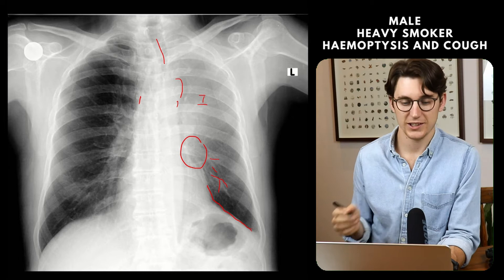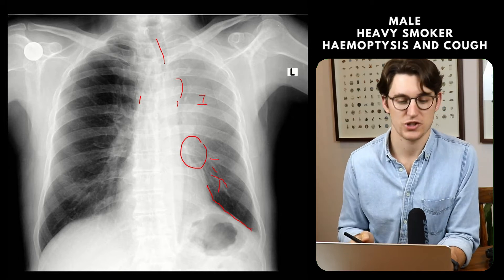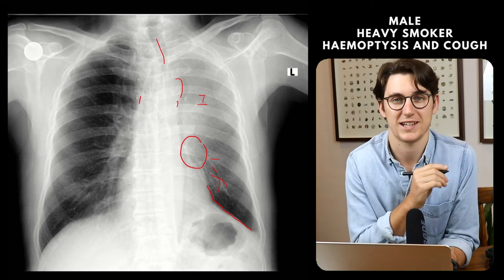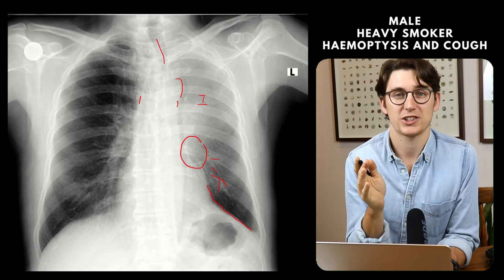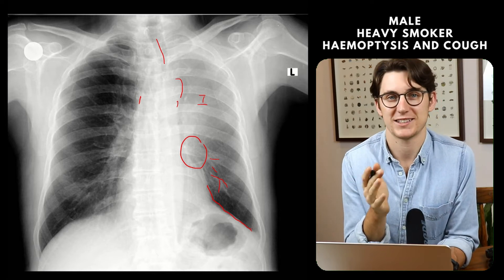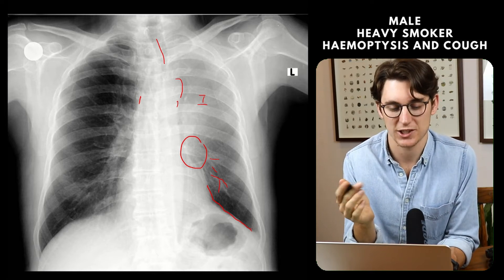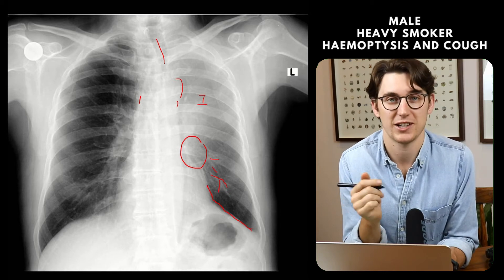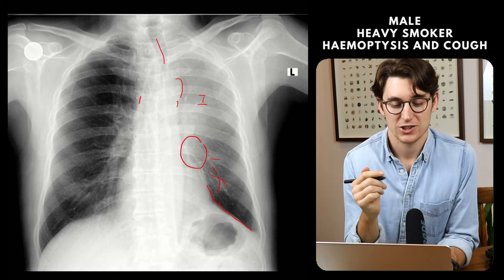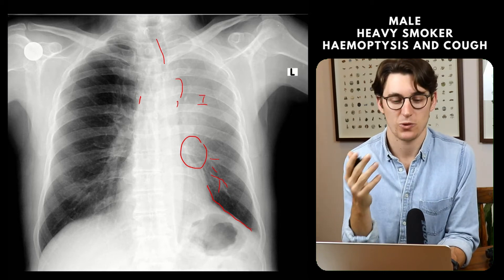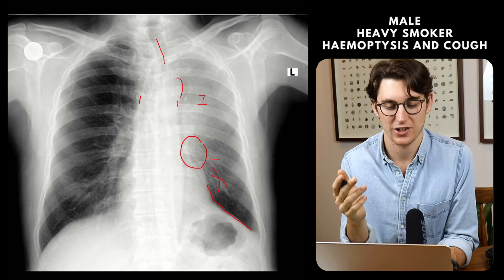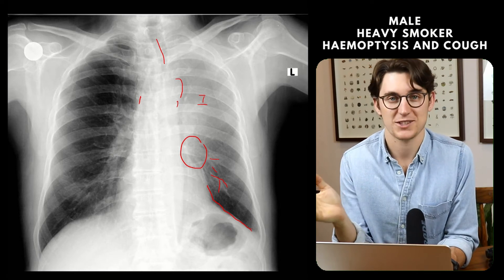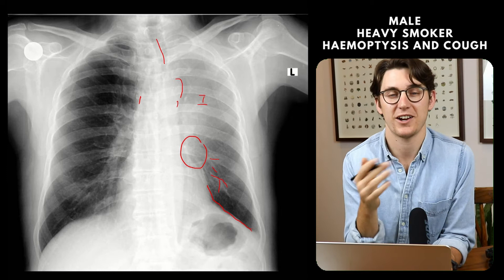This mass is not clearly visible on this projection and I can't see any overt features of metastatic disease. This patient is going to need an urgent staging CT as well as potential bronchoscopic biopsy for tissue diagnosis. I would relay these findings with the requesting clinician and suggest further imaging — and that's where I would leave my summary.